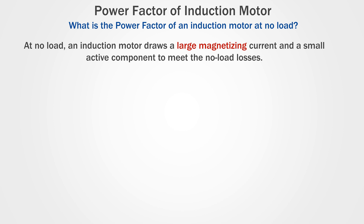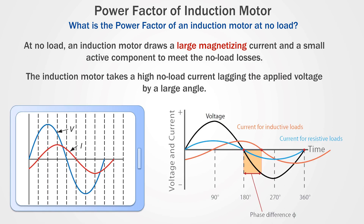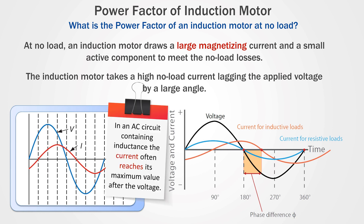At no-load, an induction motor draws a large magnetizing current and a small active component to meet the no-load losses. Therefore, the induction motor takes a high no-load current lagging the applied voltage by a large angle. Hence, the power factor of an induction motor at no-load is low. And as load is added, the active component of current increases, resulting in higher power factor.